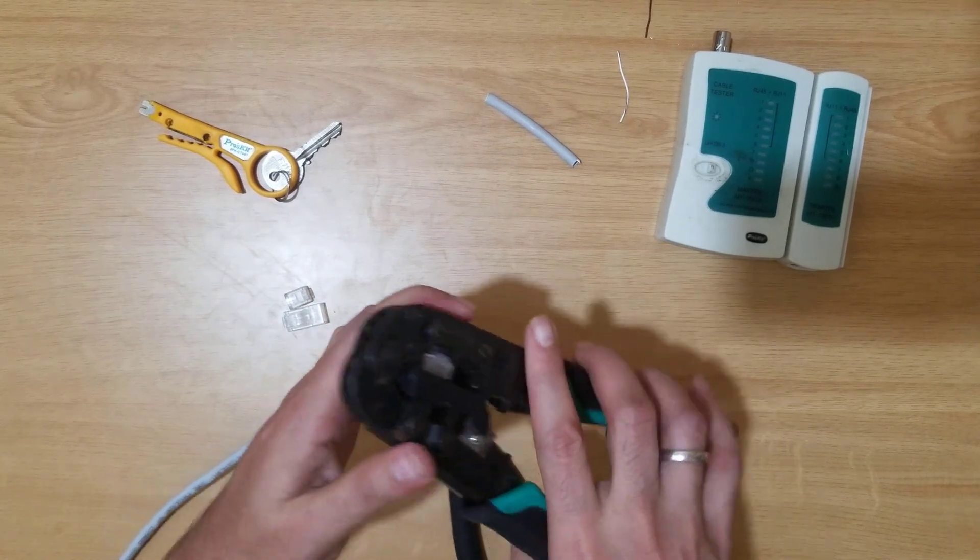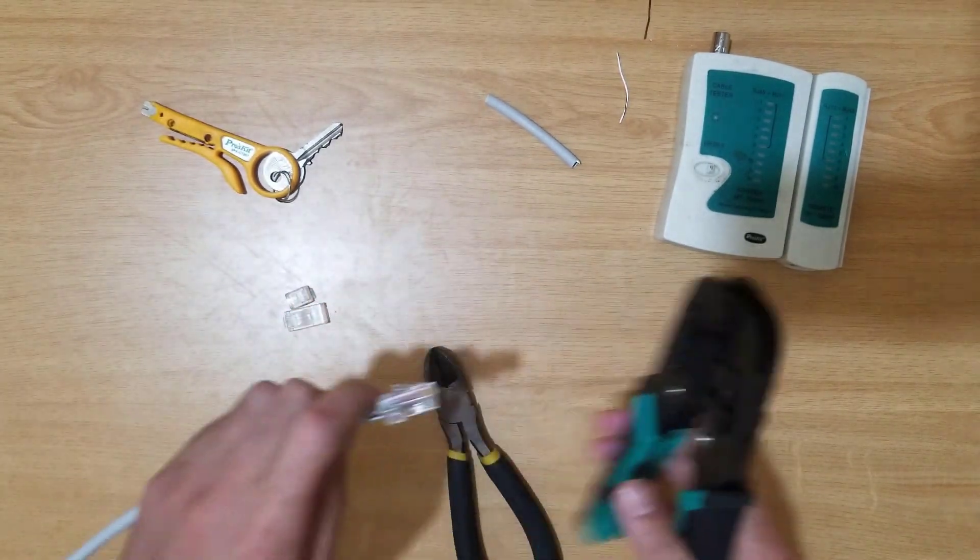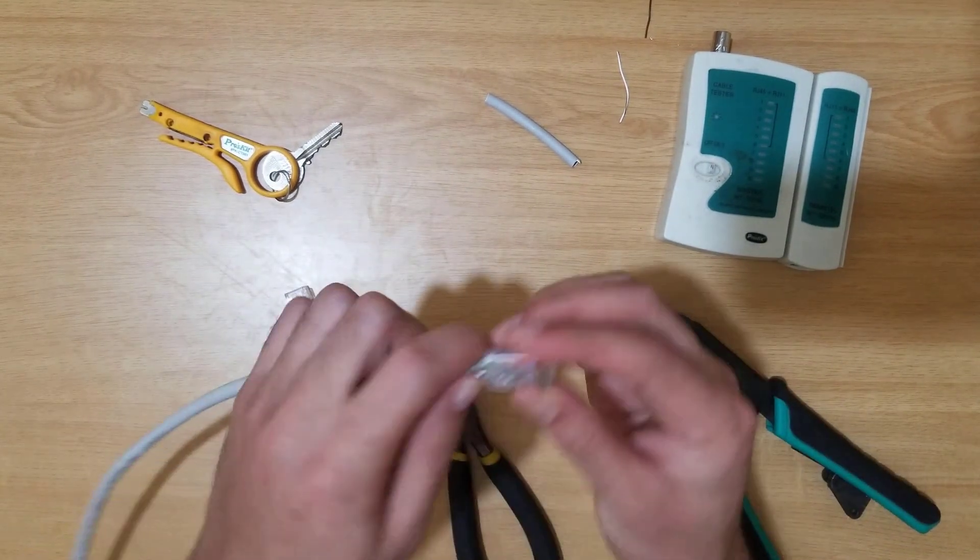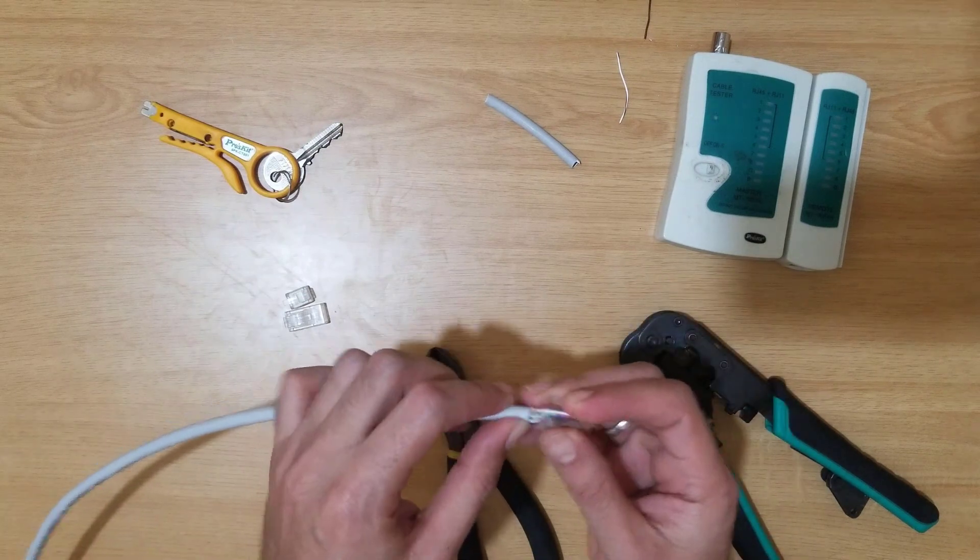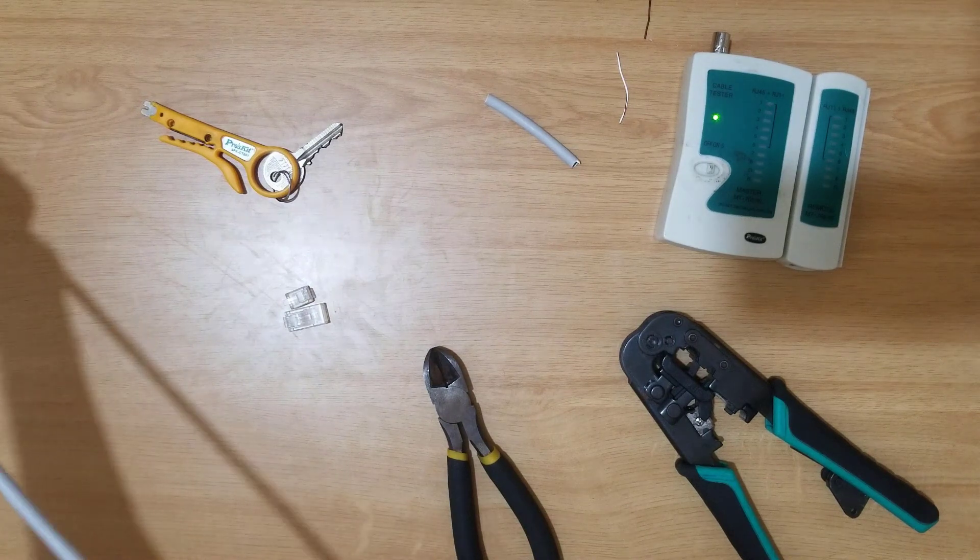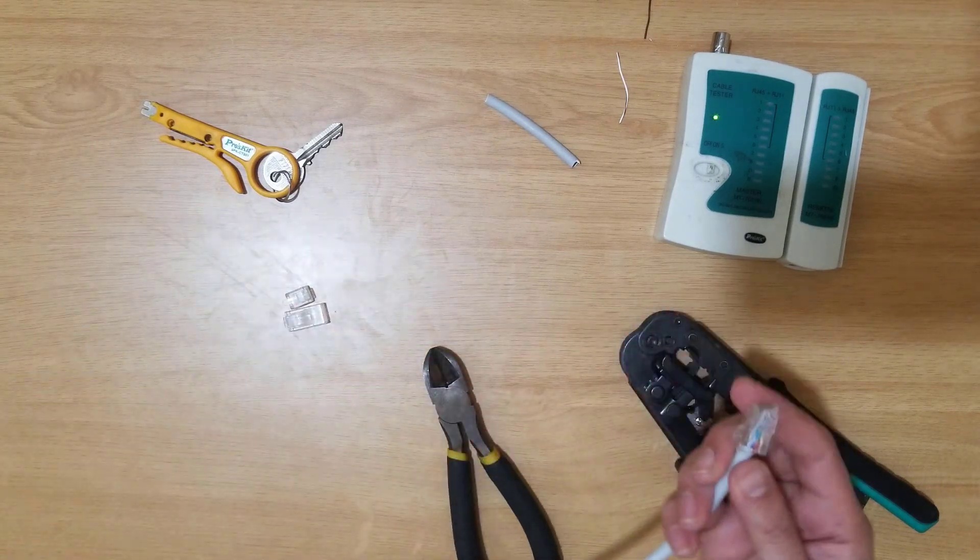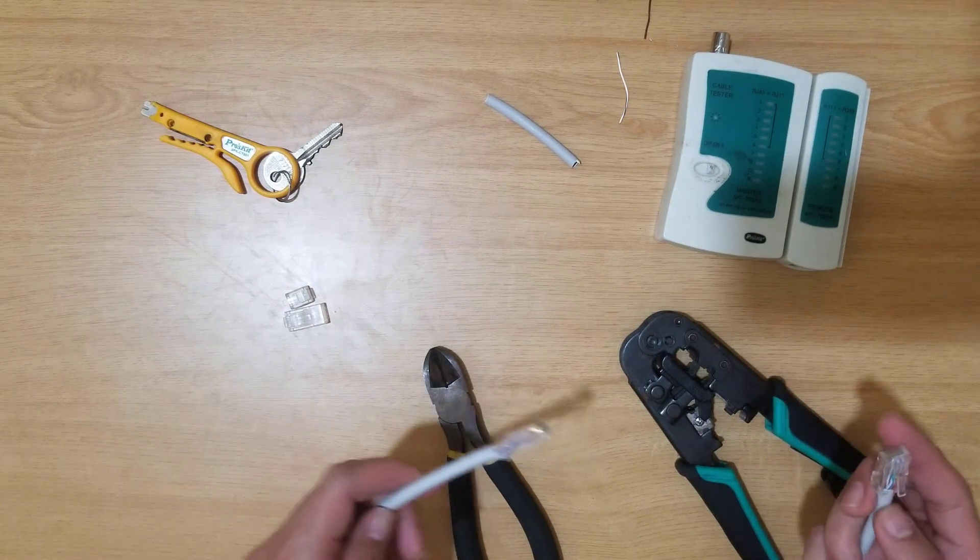Using the crimping tool, I will crimp. The connector is ready. There is some extra, so I will pull the cable. You can see now this is the proper look connector. Two-sided we have connectors and now we will test them using our LAN tester.